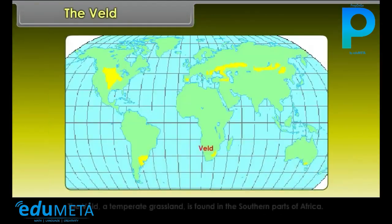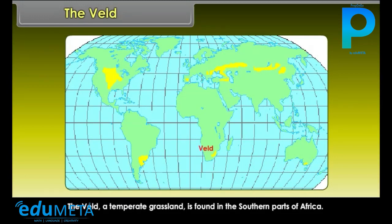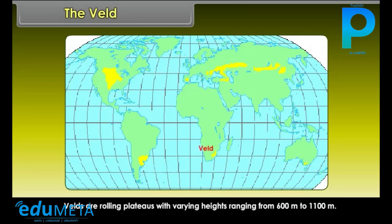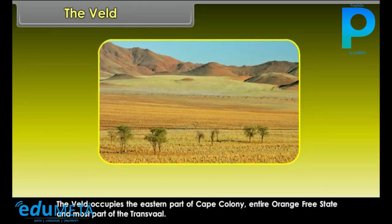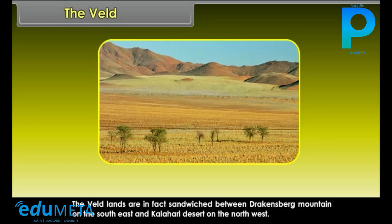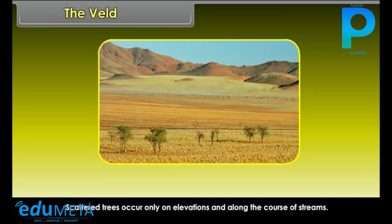The Veld is a temperate grassland found in the southern parts of Africa. Velds are rolling plateaus with varying heights ranging from 600 meters to 1,100 meters. The Veld occupies the eastern part of Cape Colony, the entire Orange Free State and most part of the Transvaal. The Veld lands are sandwiched between the Drakensberg Mountains on the southeast and the Kalahari Desert on the northwest. Scattered trees occur only on elevations and along the course of streams.